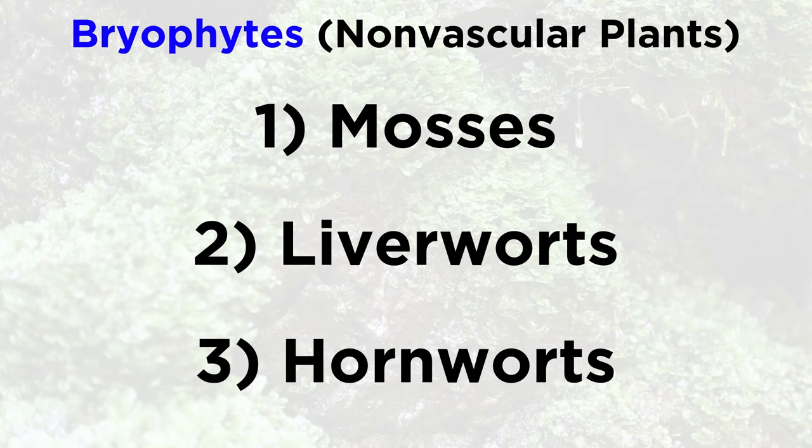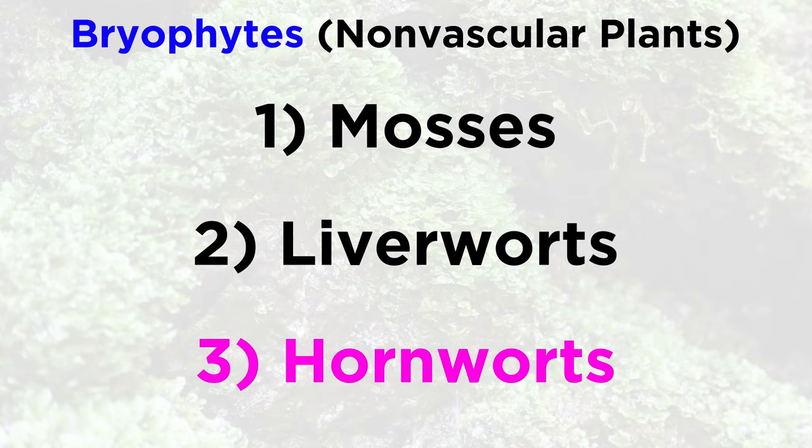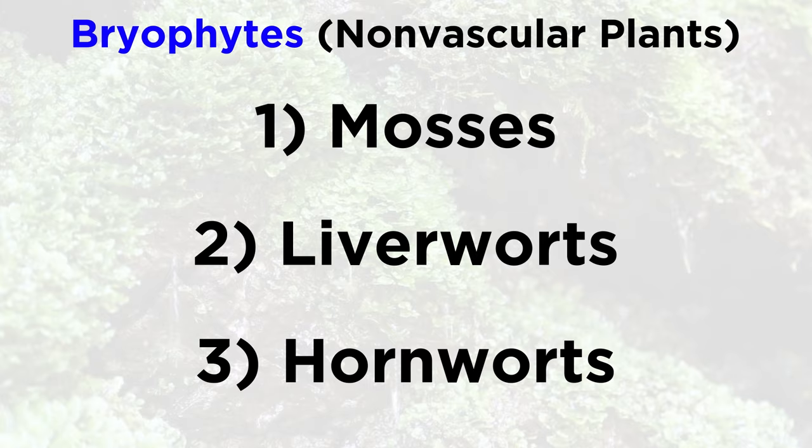The bryophyte group is actually an informal way of talking about three very similar types of nonvascular plants: mosses, liverworts, and hornworts. While distinct, all three of these types of plants have enough characteristics in common that we can talk about them together.